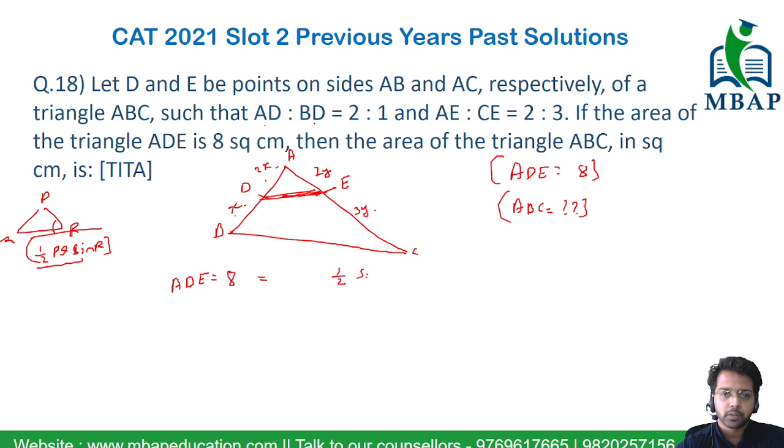ADE is basically also being given to you as AD units. So half times sin A into 2x into 2y will be nothing but 8 units. So half sin A, 2x into 2y will be equal to 8 is being given to me. And ABC will be what?